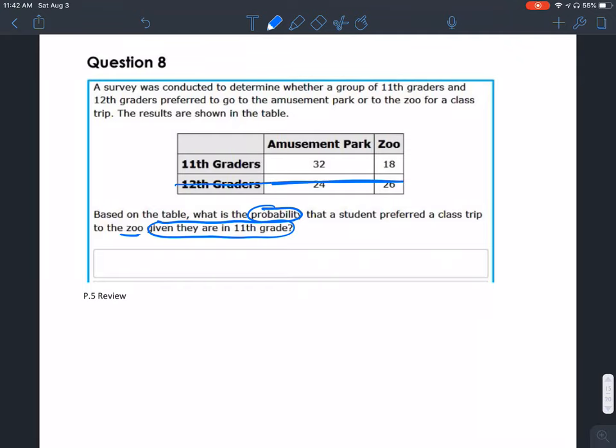We can ignore everything that's not an 11th grader. We only have to focus on the 11th graders. So this is asking, what's the probability that they prefer the zoo given that they're in 11th grade?